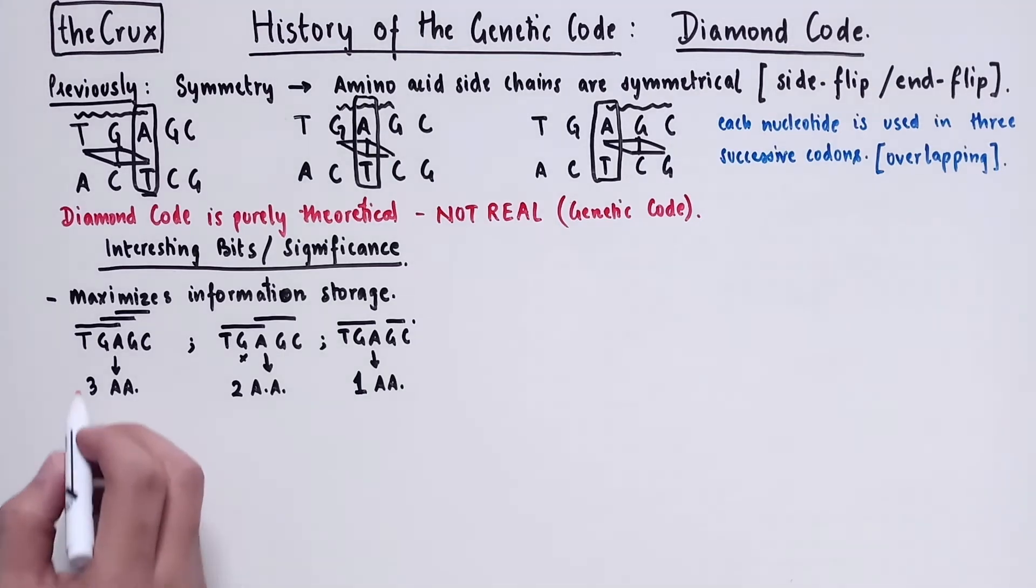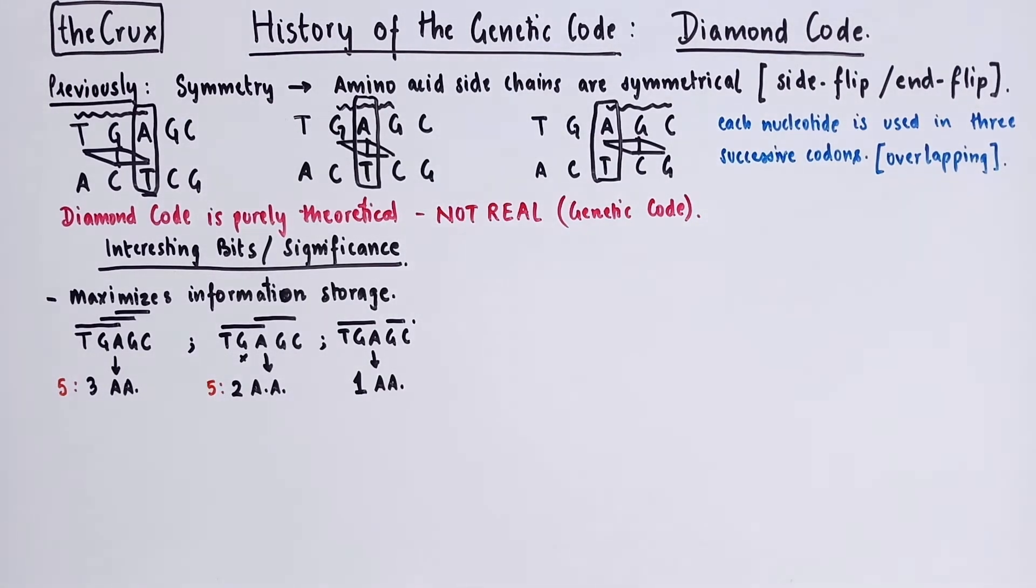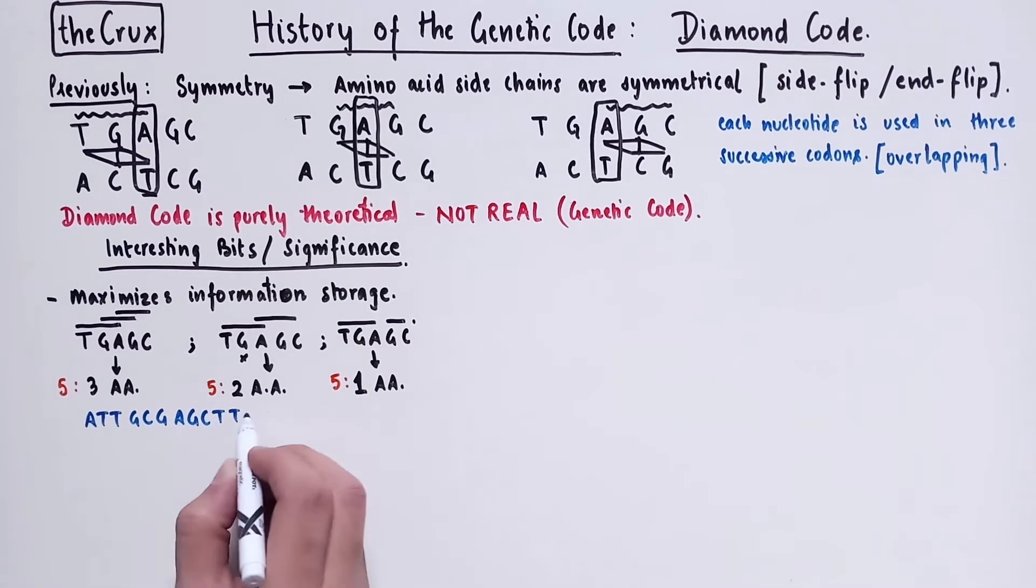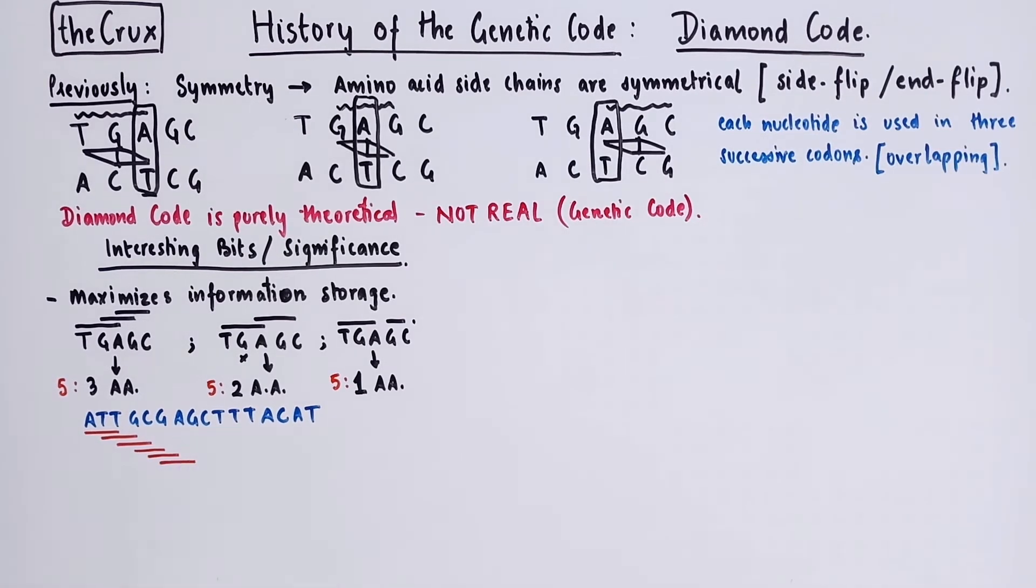So now talking about the information packing, we have five bases coding for three amino acids in the diamond code. If we reduce the overlap, we have five bases coding for two amino acids. And if we have no overlap, we have five bases for one amino acid. So you already see that the information packing efficiency is higher in the diamond code than the rest. This difference actually becomes much more prominent if you have a longer stretch of DNA. So in this piece of DNA strand, we have 16 bases that result in 14 amino acids. And if this DNA was using a non-overlapping code, you would have only five amino acids from these 16 bases.